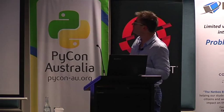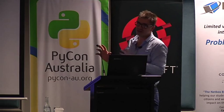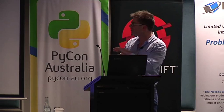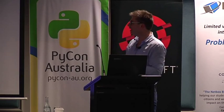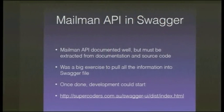The first part of my task in working with Mailman was to document the Mailman API in Swagger. The Mailman API is documented well, but the documentation was all over the place — in written documents, in the source code. It was a big exercise to go through all of the documentation, find each route, find the structure of the route, and put it into the Swagger document. It took me a few months part-time to get it done, but once it was done, the development could start.